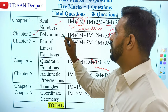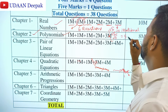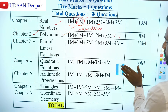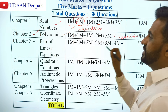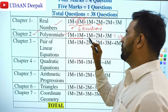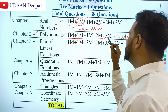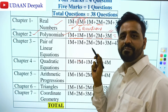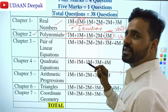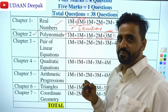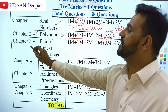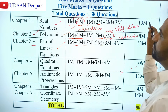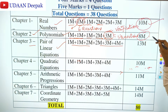From Chapter 2 — Polynomials — you can expect 5 questions: one objective type, one 1-mark, one 2-mark, and one 3-mark question. In 3-mark, you should know verification of sum of zeros and product of zeros — that is alpha plus beta and alpha times beta. The middle-term splitting method and verifying the relationship between coefficients and the roots (zeros of polynomial) is important. Total marks for Polynomials: 8.